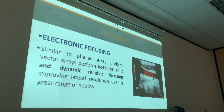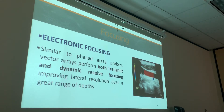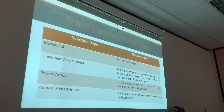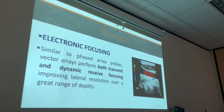So again, some but not all the crystal elements are fired simultaneously. Little groups of elements are excited at one time to create this beam — that's how it's like a linear sequential array. The beam radiates in all directions like a linear phased array, giving us the trapezoidal image. Focusing is electronic. Similar to phased array probes, vector array probes perform both transmit and dynamic receive focusing, improving lateral resolution over a greater range of depths.